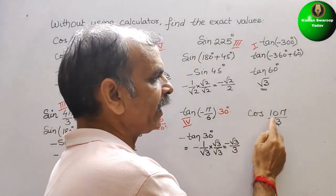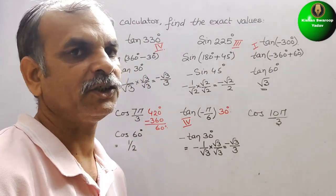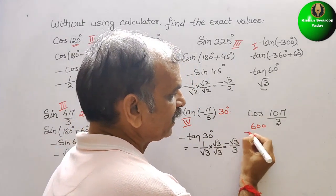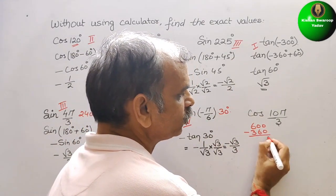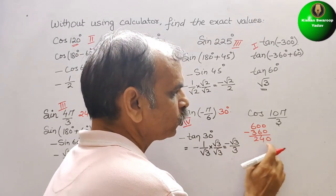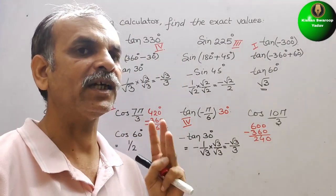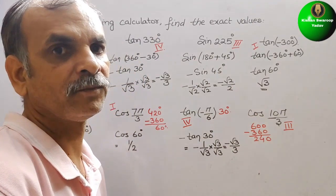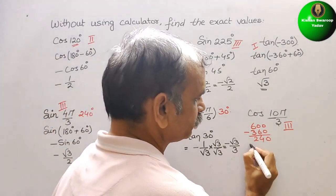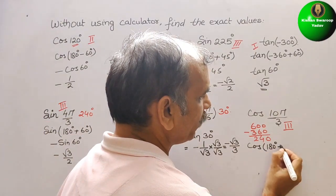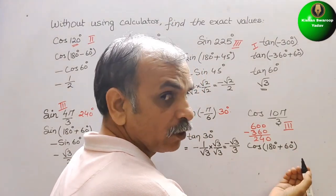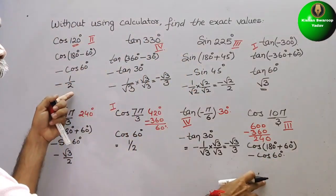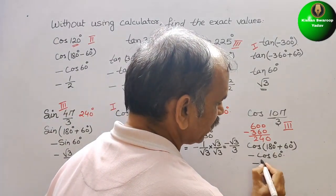Next is cos(10π/3). π/3 is 60°, and 60 × 10 = 600°. One complete rotation is 360°, so subtract 360° to get 240°. 240° lies in the third quadrant. In the third quadrant, cos is negative. So we write cos(180° + 60°), which equals minus cos 60°. Minus cos 60° = minus 1/2. So the answer is minus 1/2.